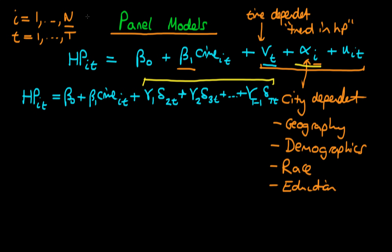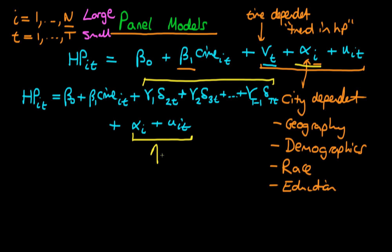As a first approach, we don't want to include city dummies, because in panel data we normally have N that is quite large — a large number of cities — but relatively few time periods. It's fine to include dummies for every time period, but including dummies for every city becomes completely unwieldy very quickly. So typically we keep the alpha i term within our errors. The actual error we have from our regression is the sum of alpha i and the idiosyncratic error u_it, which I'm going to call eta_it.